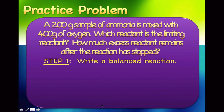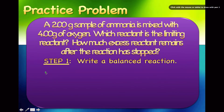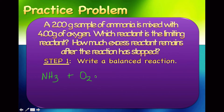We'll do one problem together in this podcast. A 2-gram sample of ammonia is mixed with 4 grams of oxygen. Which reactant is limiting? How much excess reactant remains after the reaction stops? Step one is to write a balanced chemical reaction: ammonia is NH3, reacted with oxygen (O2), which gives us nitrogen monoxide (NO) and water (H2O).